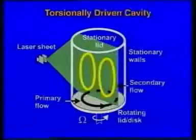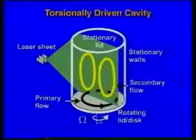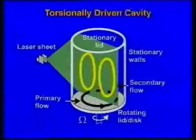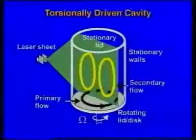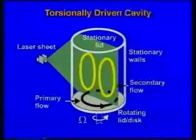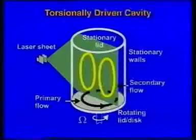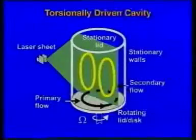A laser sheet is used to visualise the secondary flow patterns by inserting fluorescent dye into the flow cell through the top lid. The bottom lid, or disc, is rotated at a large range of speeds, such that the swirling flow is generated in the primary flow direction.